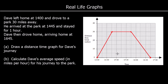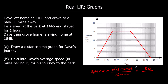Part B says calculate Dave's average speed in miles per hour for his journey to the park. Speed is the gradient of the line, or we can say speed equals distance divided by time. On the way to the park he went 30 miles in 45 minutes. We want miles per hour, so we can change 45 minutes into hours — 45 minutes is three-quarters of an hour, or 0.75.